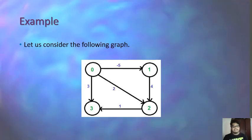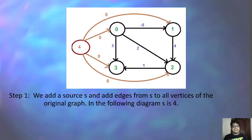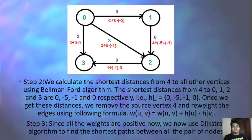Consider this example. Step 1: a source S (vertex 4) is added with edges to all other vertices of the original graph. Step 2: using the Bellman-Ford algorithm, we calculate shortest distances from vertex 4 to all other vertices. The shortest distances from 4 to vertices 0, 1, 2, and 3 are 0, −5, −1, and 0 respectively, as shown in the figure. Step 3: we remove source vertex 4 and re-weight the edges using the formula W(U,V) = W(U,V) + H(U) − H(V). Since all weights are now positive, we can apply Dijkstra's algorithm to find the shortest path between all pairs of nodes.